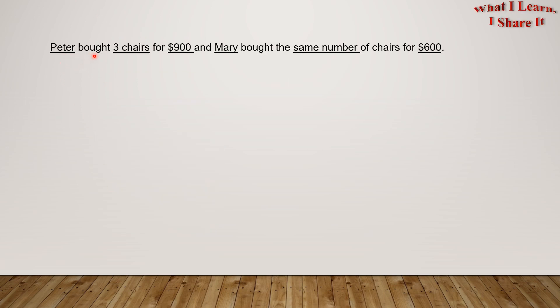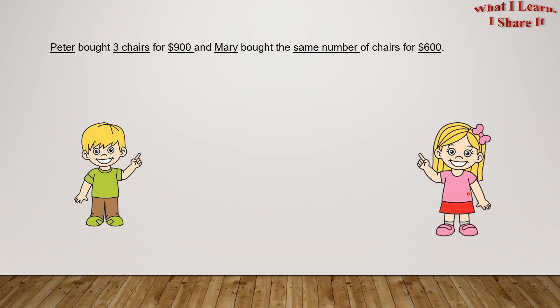So, Peter bought three chairs for $900 and Mary bought the same number of chairs for $600. So here is Peter, and here is Mary. I'm representing Peter's chairs with these three boxes. Each of them is for one chair, and then they make three chairs. It's for $900.